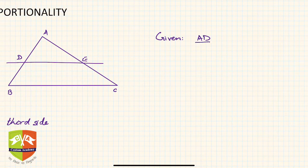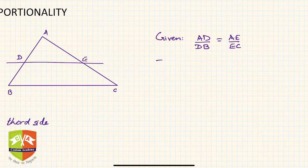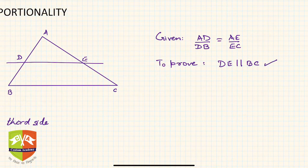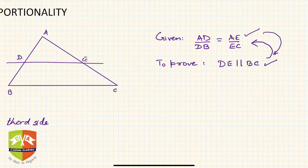Given: AD/DB = AE/EC. To prove: DE is parallel to BC. Now you understand why this is the converse — in BPT, the parallel condition was given and you arrived at the proportion, but in the Converse of BPT, the proportion is given and you have to prove that DE is parallel to BC.